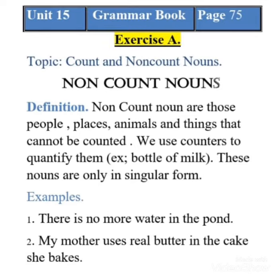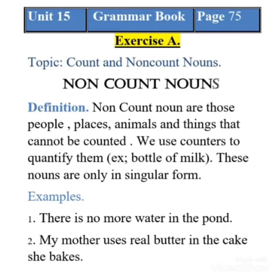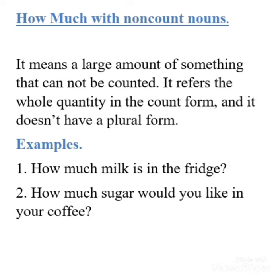A lot of drops together make one liter of milk, but that milk is in only one bottle, which means there is only one form — the singular form — in non-count nouns. For example: 'There is no more water in the pond.' We cannot count all the drops of water in the pond, so water is a non-count noun and is in singular form. Another example: 'My mother uses real butter in the cake she bakes.' We cannot count butter or cream.